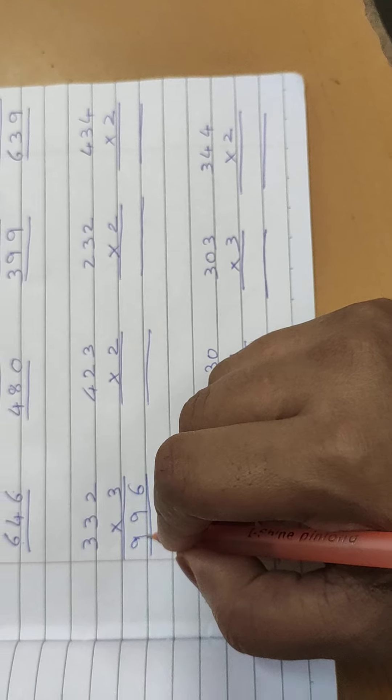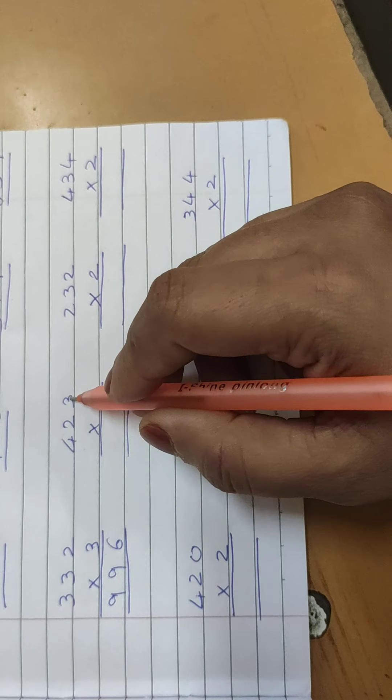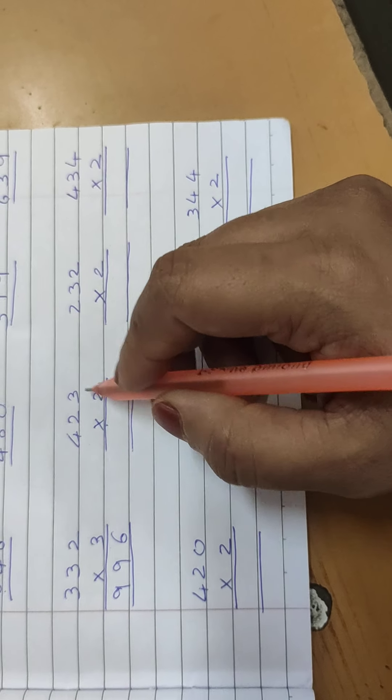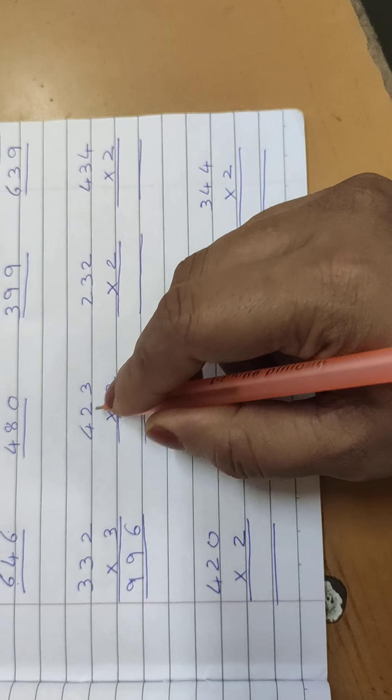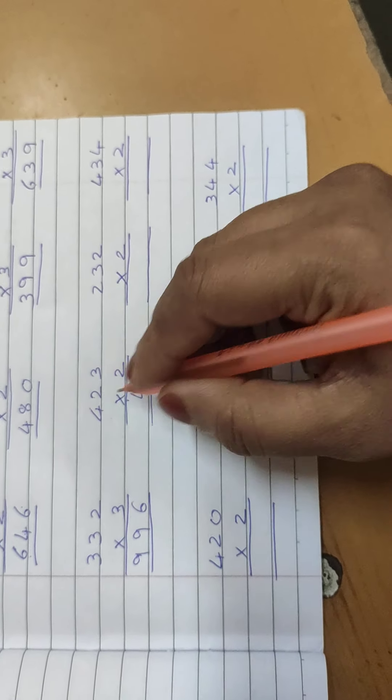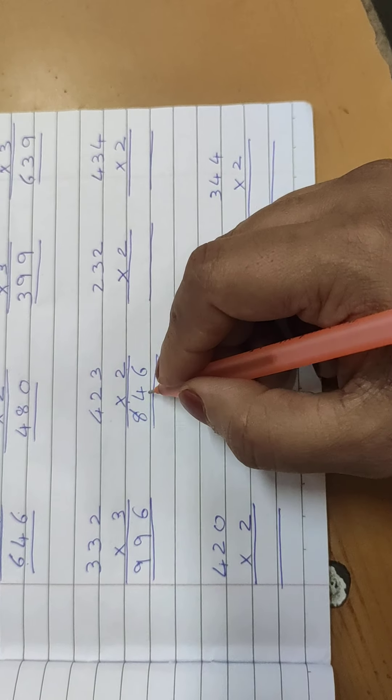Now 423 multiply by 2. 2 threes are 6, 2 twos are 4, 2 fours are 8. 846.